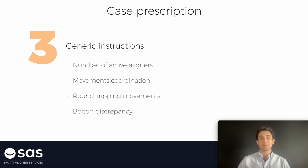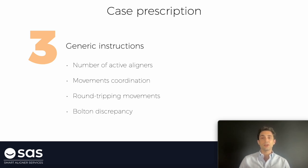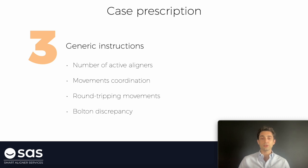We have explained some basic aspects of how to write the instructions and how to translate all the orthodontic limits that we have on the cases. But now I want to focus on some special instructions that are common to many cases. I used to write them on clinical preferences or in special instructions to apply them. Those instructions are: the number of active aligners that I want on this first phase, movements coordination, round tripping movements, and Bolton discrepancy — how we are going to treat or solve this Bolton discrepancy.